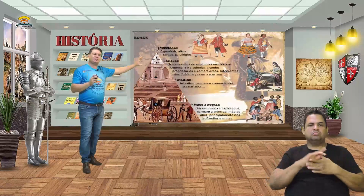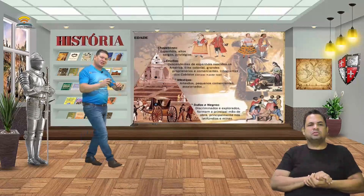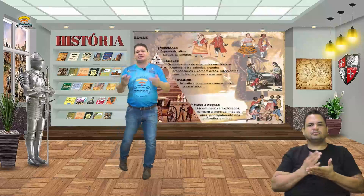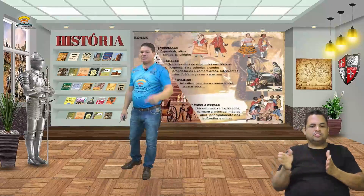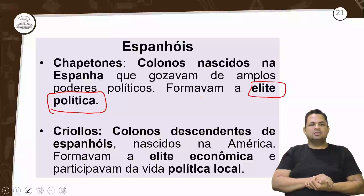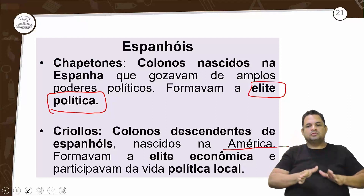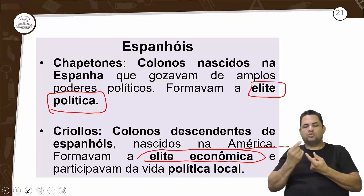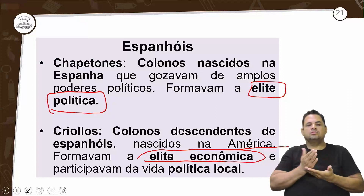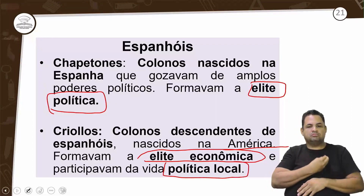Depois dos chapetones, temos os crioulos — descendentes dos espanhóis que vieram para cá, nascidos na América. Formavam a elite econômica e participavam da vida política local.